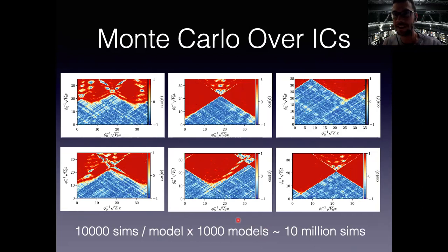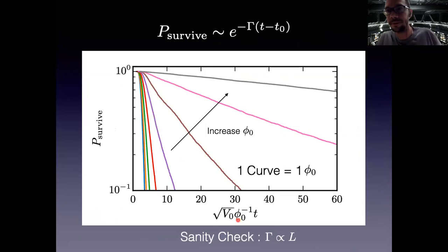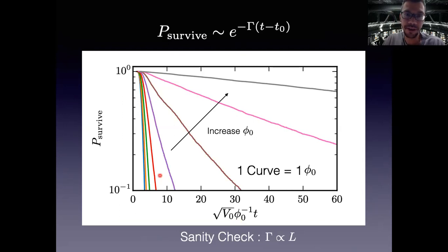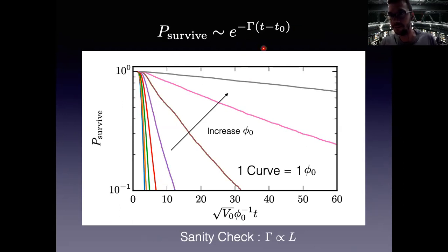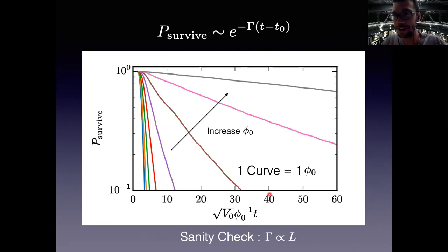Feasibility is an important issue when running 10 million simulations; 1D is a good place to start, and I'm working on extending to 2D — 3D is probably hopeless. From the ensemble, we compute the survival probability that no bubble has nucleated by a given time. Each curve corresponds to a fixed value of φ₀; as φ₀ increases the curves shift. Notably, we get very nice exponential decay without putting it in by hand — it's just a result.